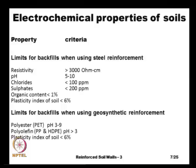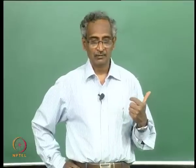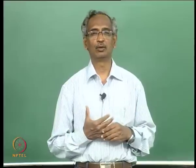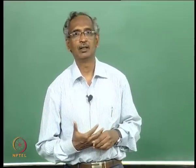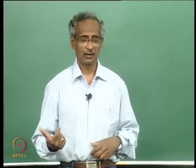When using polymeric reinforcement, the electrochemical requirements are somewhat different: for polyester the pH should be in the range of 3 to 9, and for polypropylene or high-density polyethylene the pH should be greater than 3. The electrochemical requirements are more stringent when using metallic reinforcements, whereas for polymeric reinforcements we do not need to be as stringent because plastics do not interact with soil directly or indirectly.